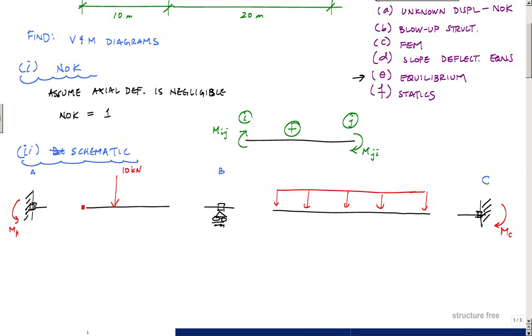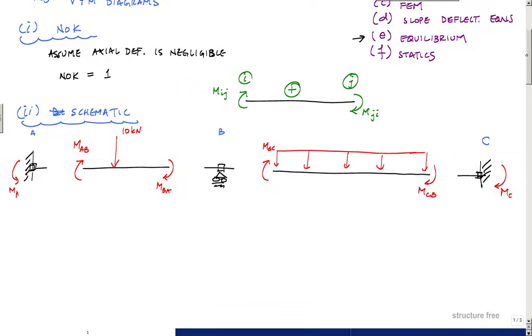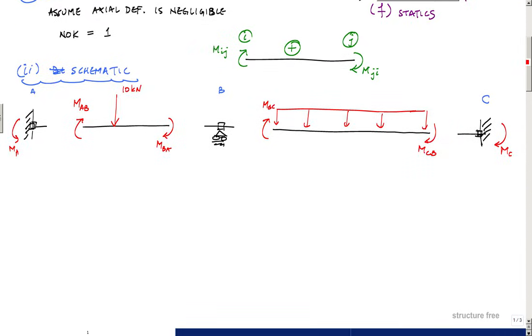For me in each member that I've cut, I want to draw on the member (not the joints, on the member) my internally positive moments according to this sign convention. Here M_AB would be here clockwise, M_BA would be again clockwise here, then here this would be M_BC and here would be M_CB. Then from there you go to the other side and apply equal and opposite.